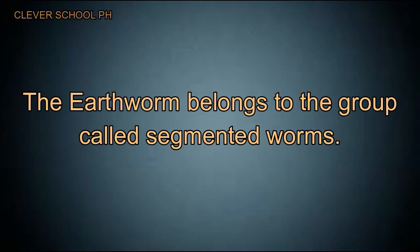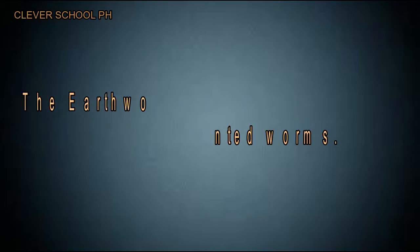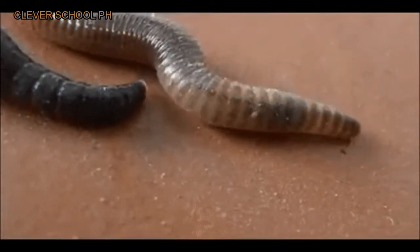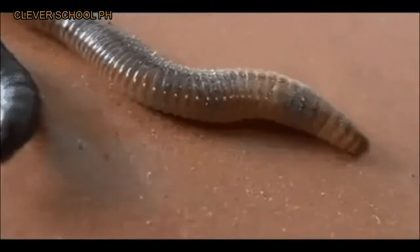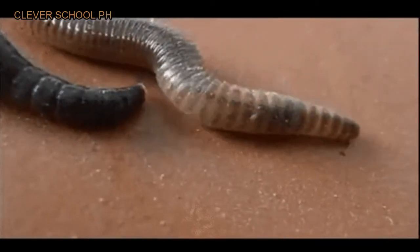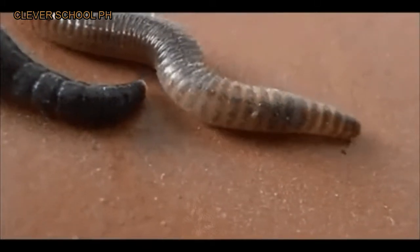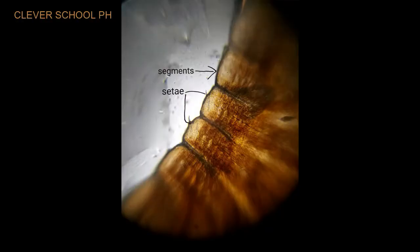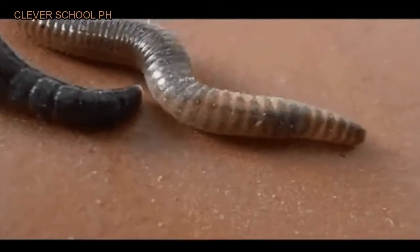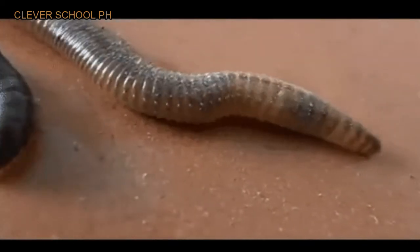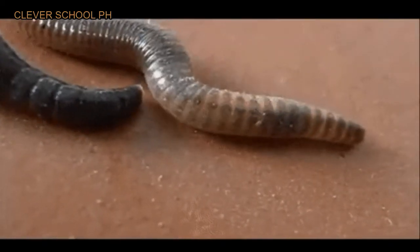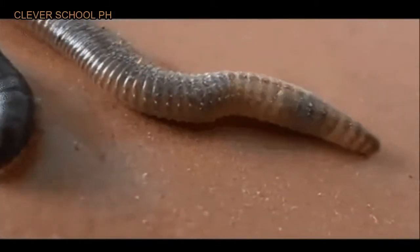The earthworm belongs to the group called segmented worms. The body of the earthworm is cylindrical and divided into ring-like segments. On each segment, except for the first and the last, are pairs of tiny bristles that help the worm move through the soil. Earthworms have no eyes and ears; they are sensitive to heat, light, and touch. They may reproduce both asexually through regeneration and sexually.